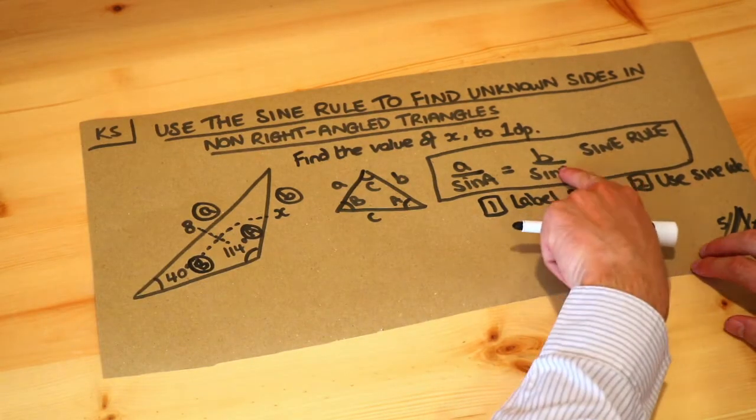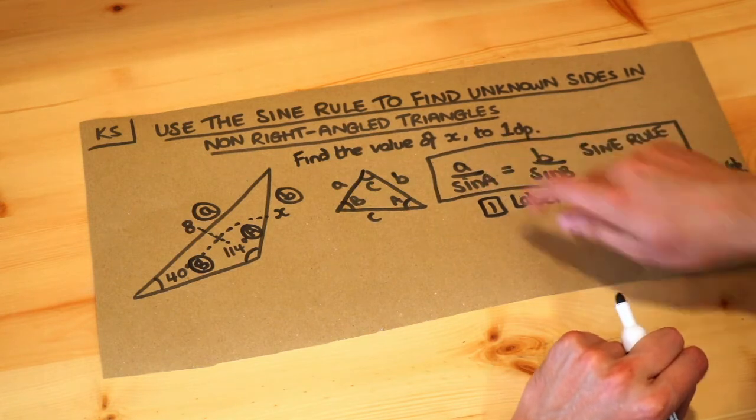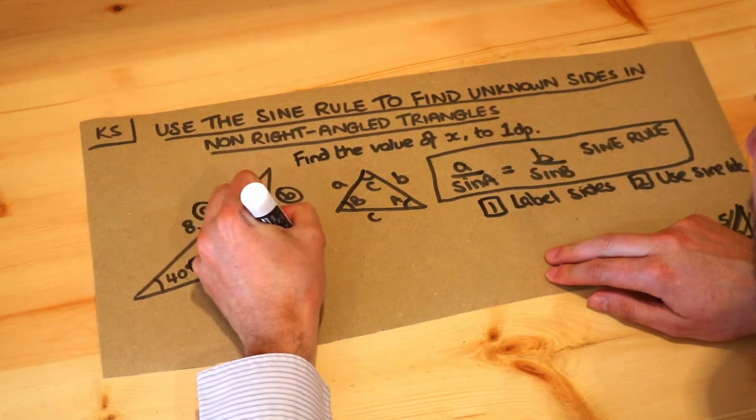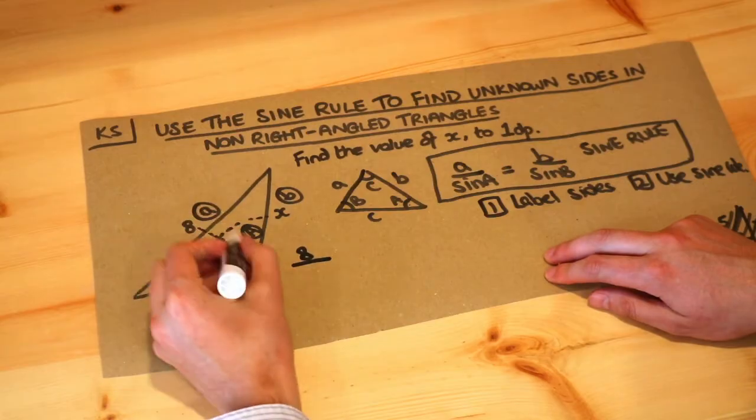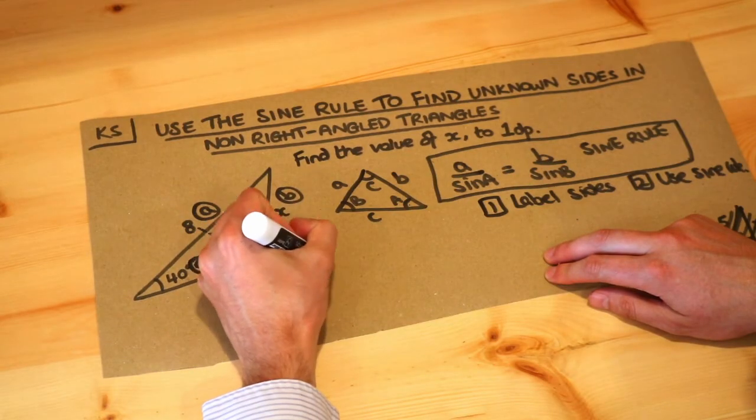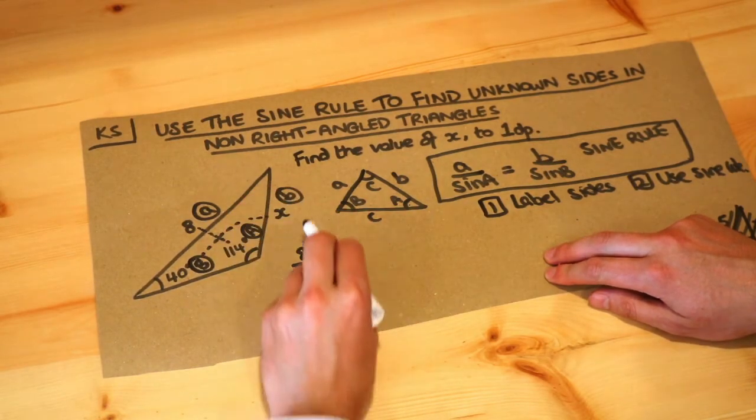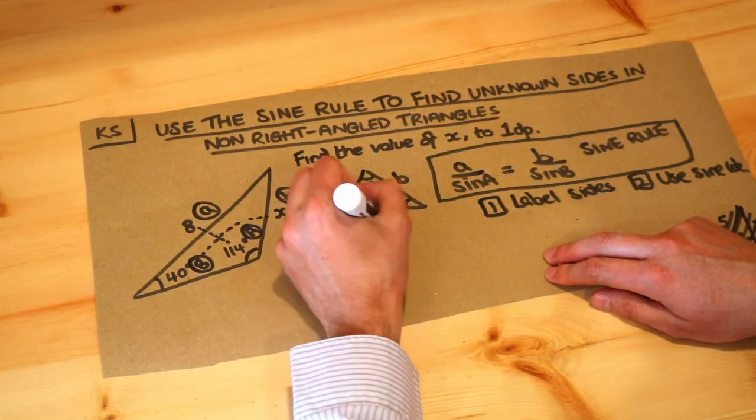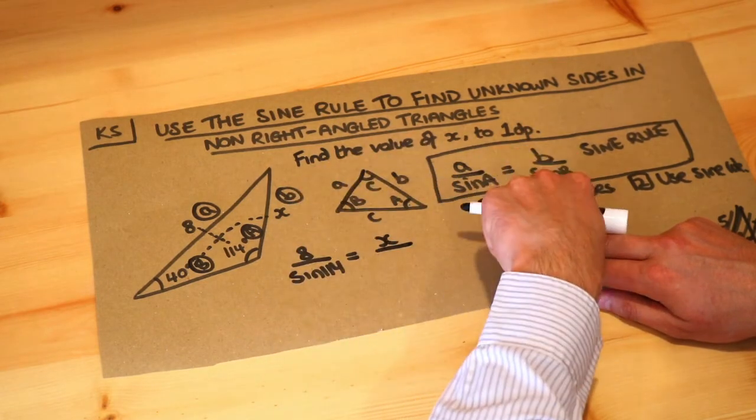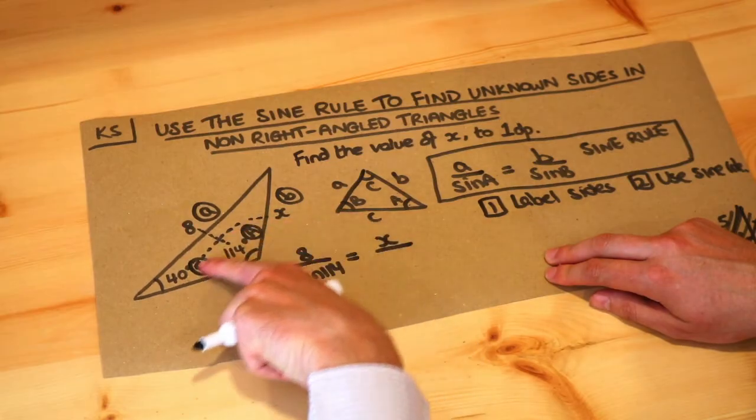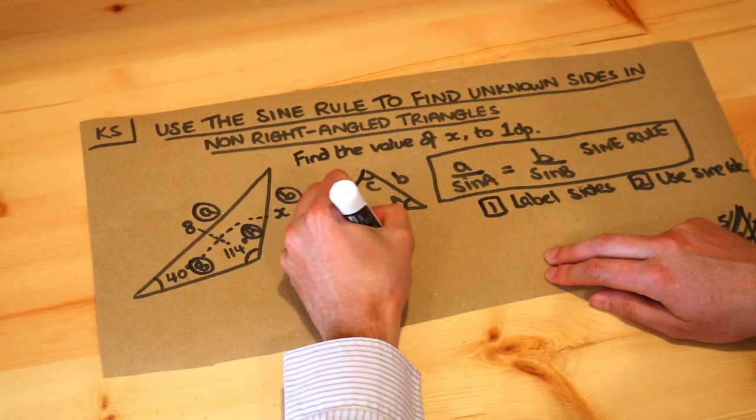Then we're going to substitute into the sine rule. We've got a over sine of capital A, so a, which is 8, over sine of the opposite angle, sine of 114, equals b, so x, over the sine of its opposite angle, sine of 40 degrees.